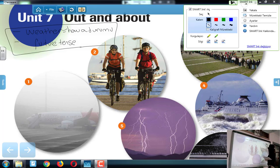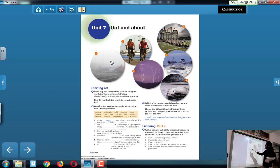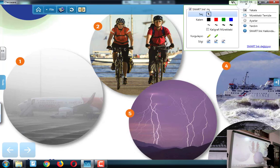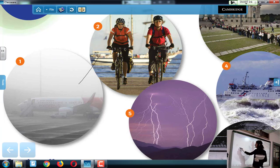You see the pictures here. Şimdi buradaki resimleri görüyorsunuz. How is the weather like in the first picture? In the first picture hava durumu nasıl? Sisli değil mi? In English we say foggy, sisli.